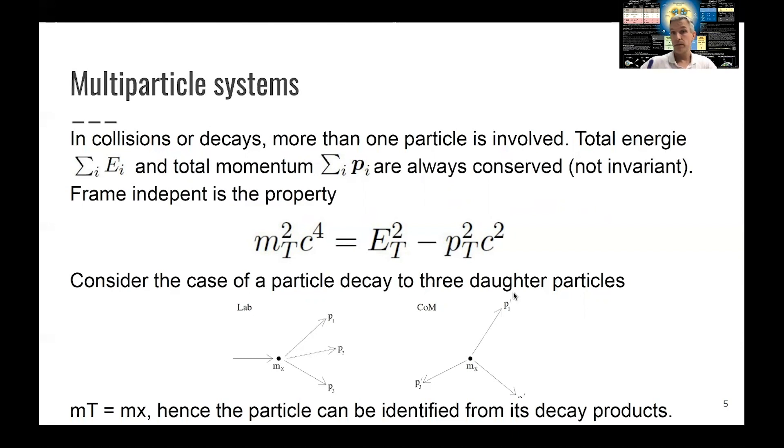Invariant here means we perform a transformation like the Lorentz transformation, and the property doesn't change. Conserved here means we have a reaction, and in that reaction, the property is not changing. So those are two different distinct things. So now you can look at the invariant property, or the one which is conserved in this collision, which is this mass term or mass square term, the total mass.